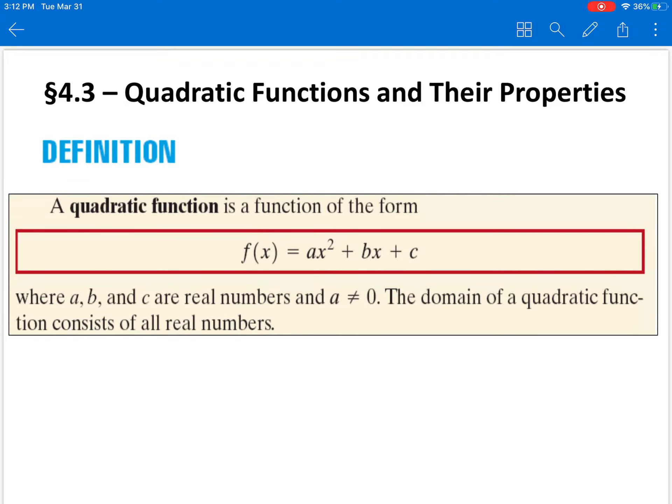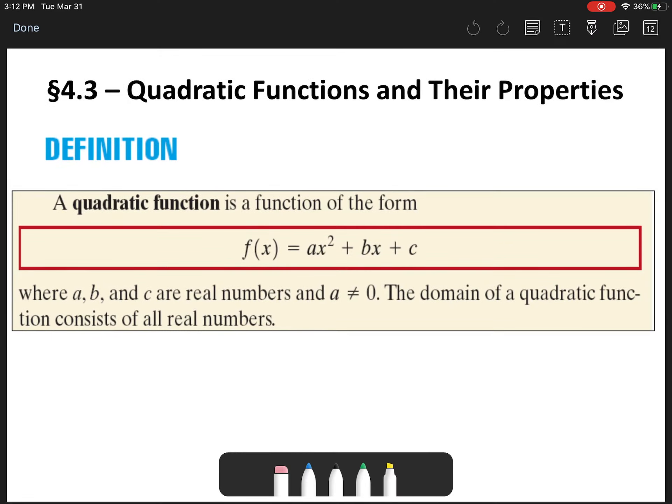All right, class. Today we're about to talk about these quadratic functions and their properties. We already know that the form for a quadratic function is ax squared plus bx plus c. The reason why a cannot equal zero is because if a equals zero, then this right here would no longer exist and therefore would no longer be a quadratic function. It would then become a linear function.